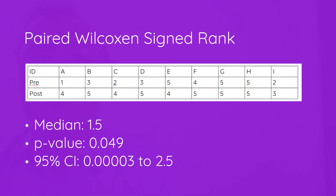This is the paired Wilcoxon Signed Rank Test. Noting that this is paired is an extremely important part — and a place where early-career researchers can make a mistake. Remember that these are not independent data. The null hypothesis is that the difference for each of the nine participants between pre- and post-test score is zero. Using the Wilcoxon Signed Rank Test, we find that the median change is 1.5. We get a 95% confidence interval of just above 0.0 to 2.5, and a p-value of 0.049.